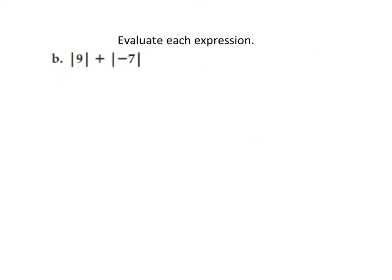Let's evaluate expression B: the absolute value of 9 plus the absolute value of negative 7. I'll do these individually. The absolute value of 9 — the distance 9 is from 0 is 9 spaces, and it's positive, so the bars disappear. The plus sign stays because it's outside the absolute value. Then the absolute value of negative 7 — the distance negative 7 is from 0 is 7 spaces, and distance is always positive. Now we have 9 plus 7, which equals 16.